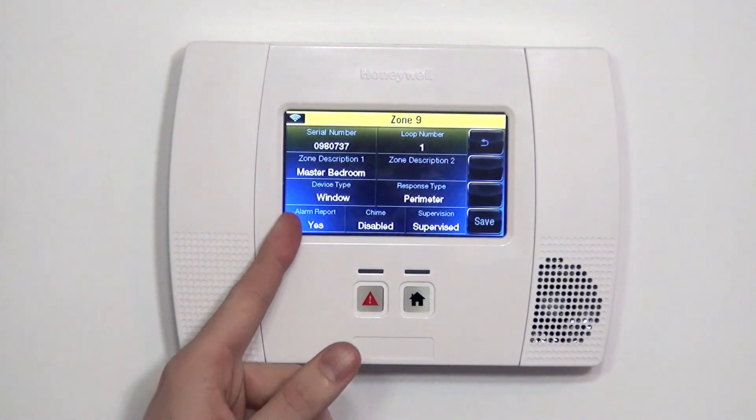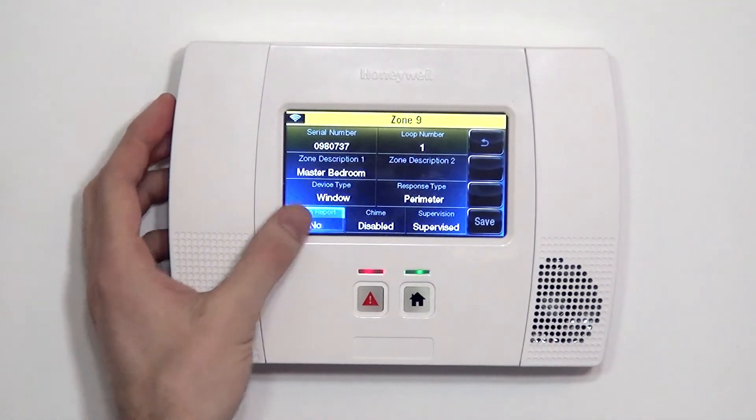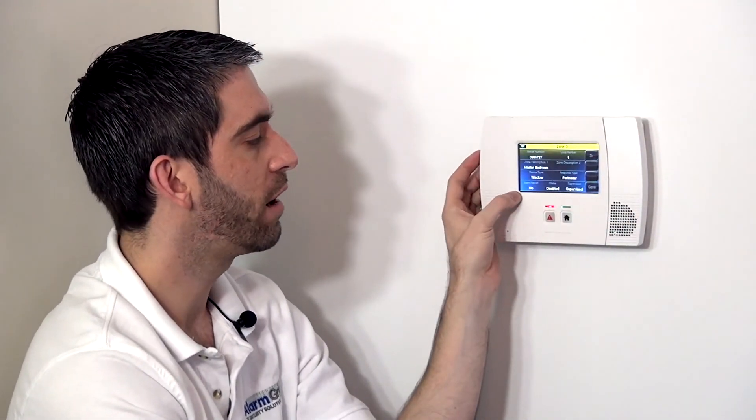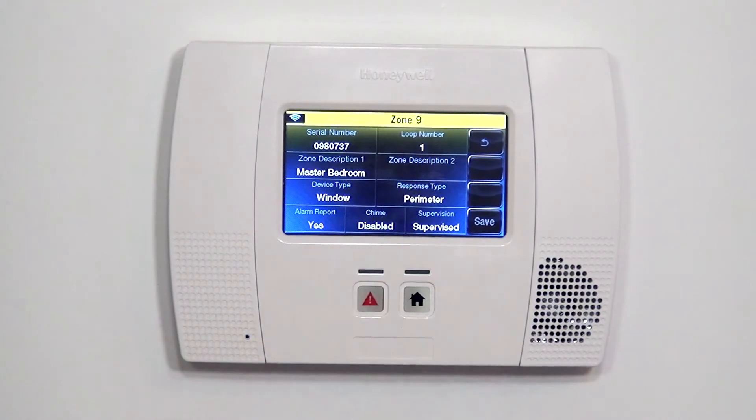Alarm report, this is a toggle, yes or no. Yes means send this alarm to the central station. No means sound the audible alarm in the house, but don't send the signal through to the central. We are monitored and we do want them to respond to this zone, so we're going to set it to yes.